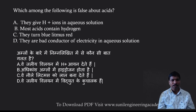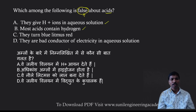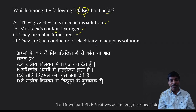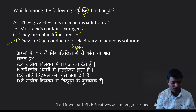Which of the following statements is false about acids? They produce H+ ions in aqueous solution — yes, correct. Most acids contain hydrogen, like HCl and HNO3 — also correct. They turn blue litmus to red litmus — also correct. They are bad conductors of electricity — no, acids are good conductors of electricity. That statement is false. So the answer is option D.